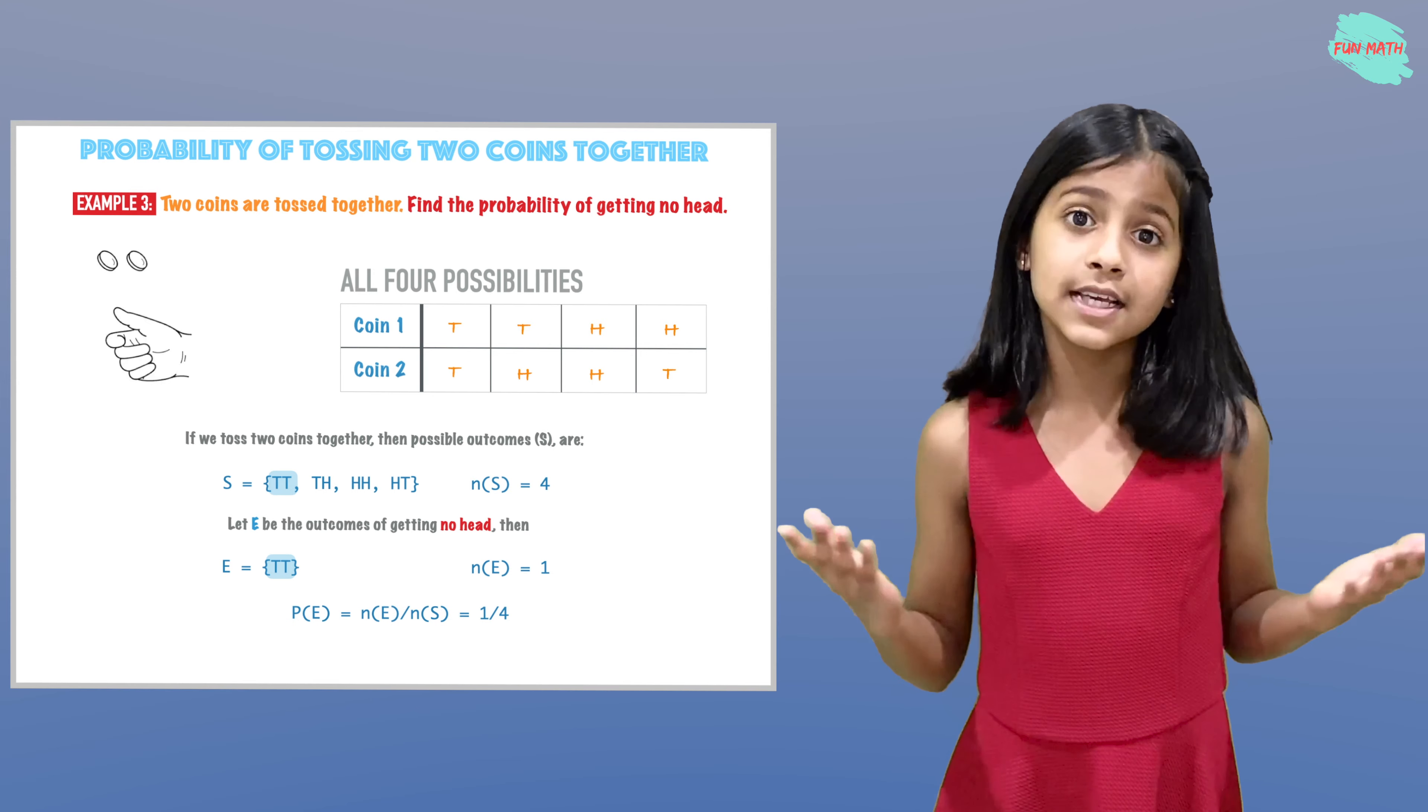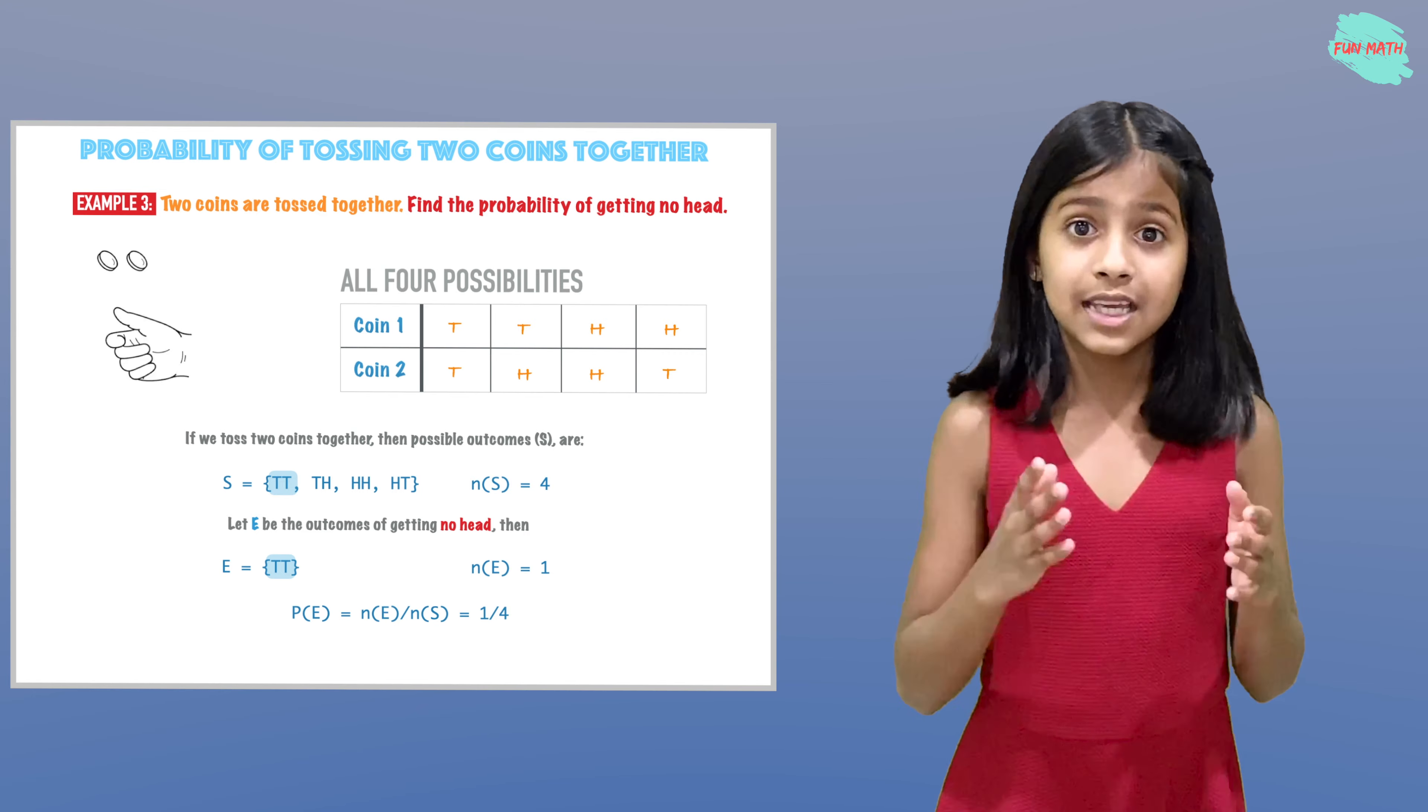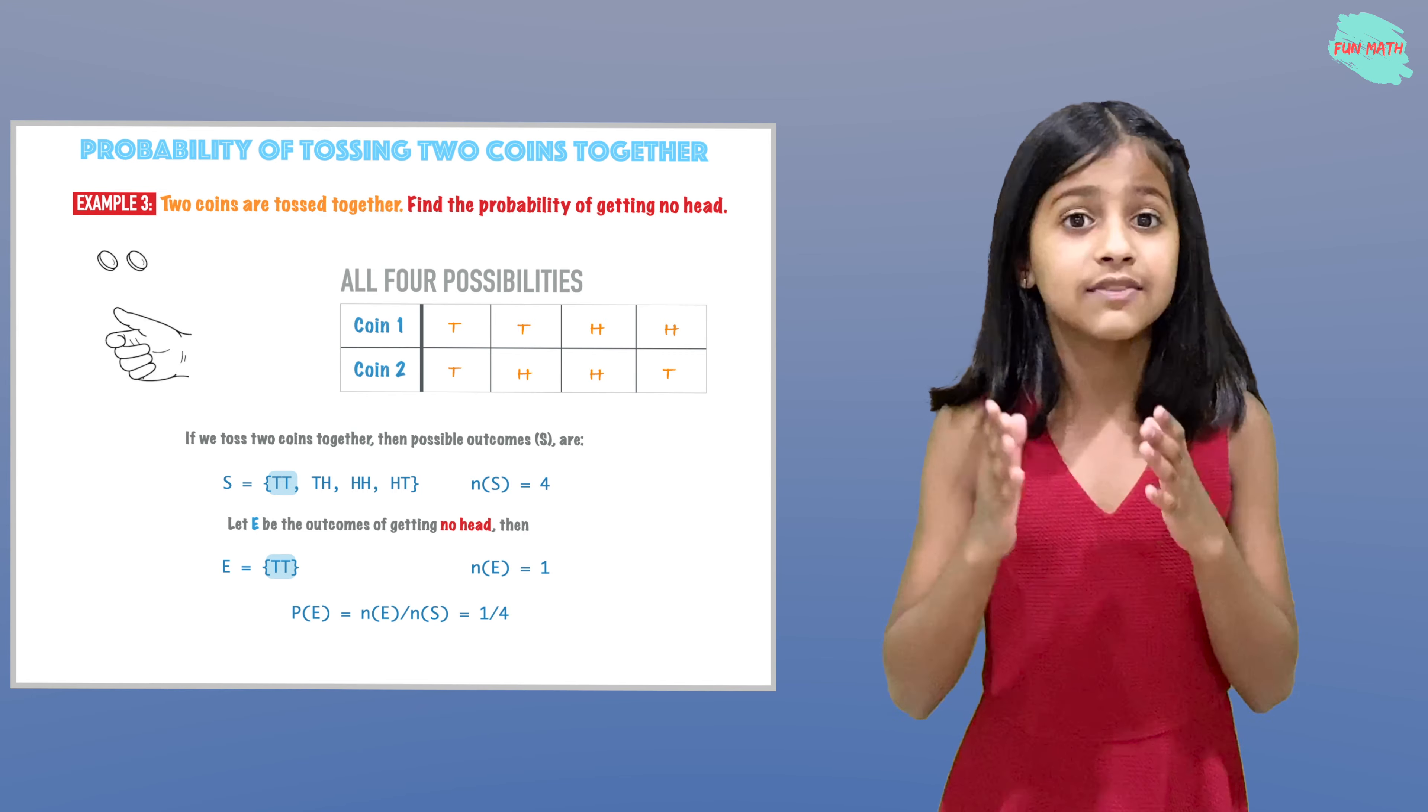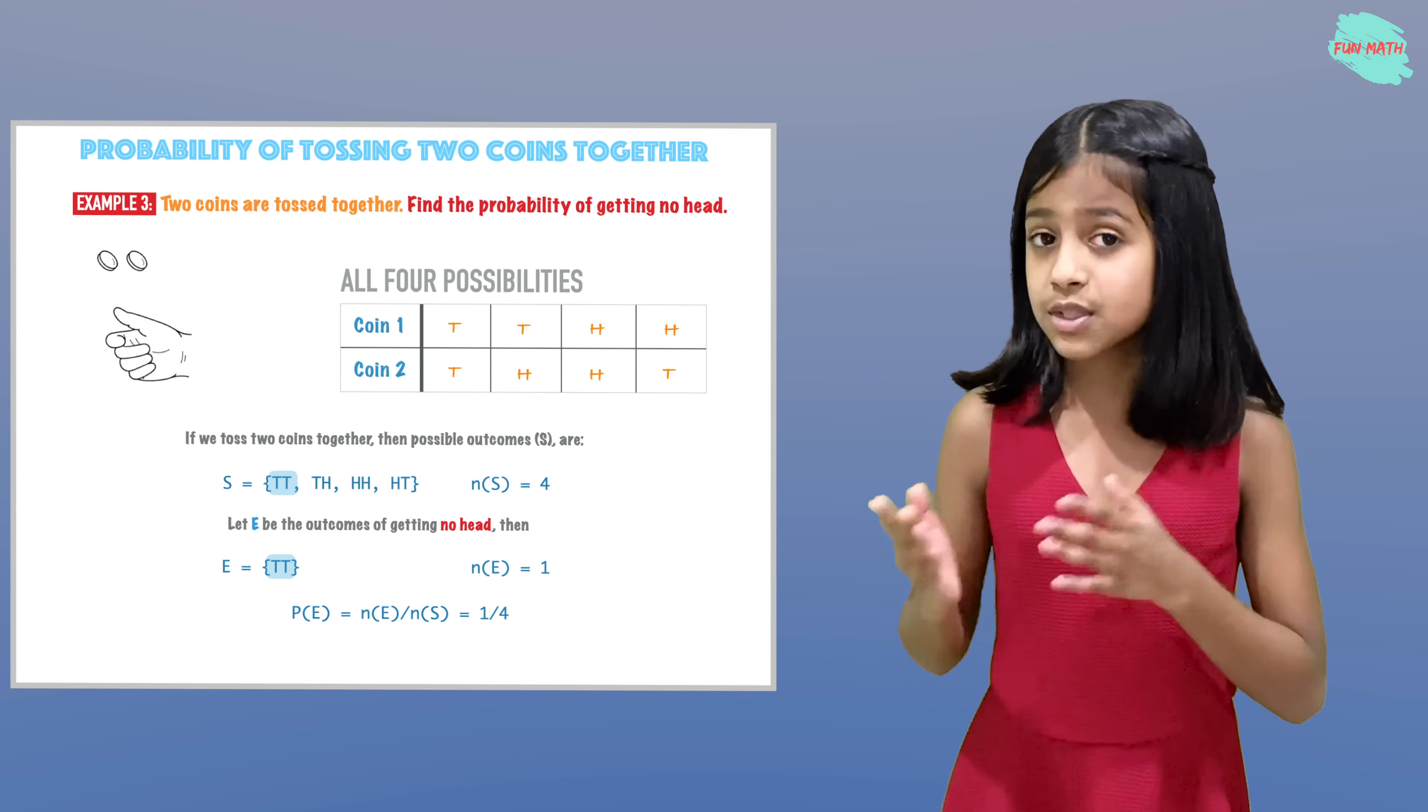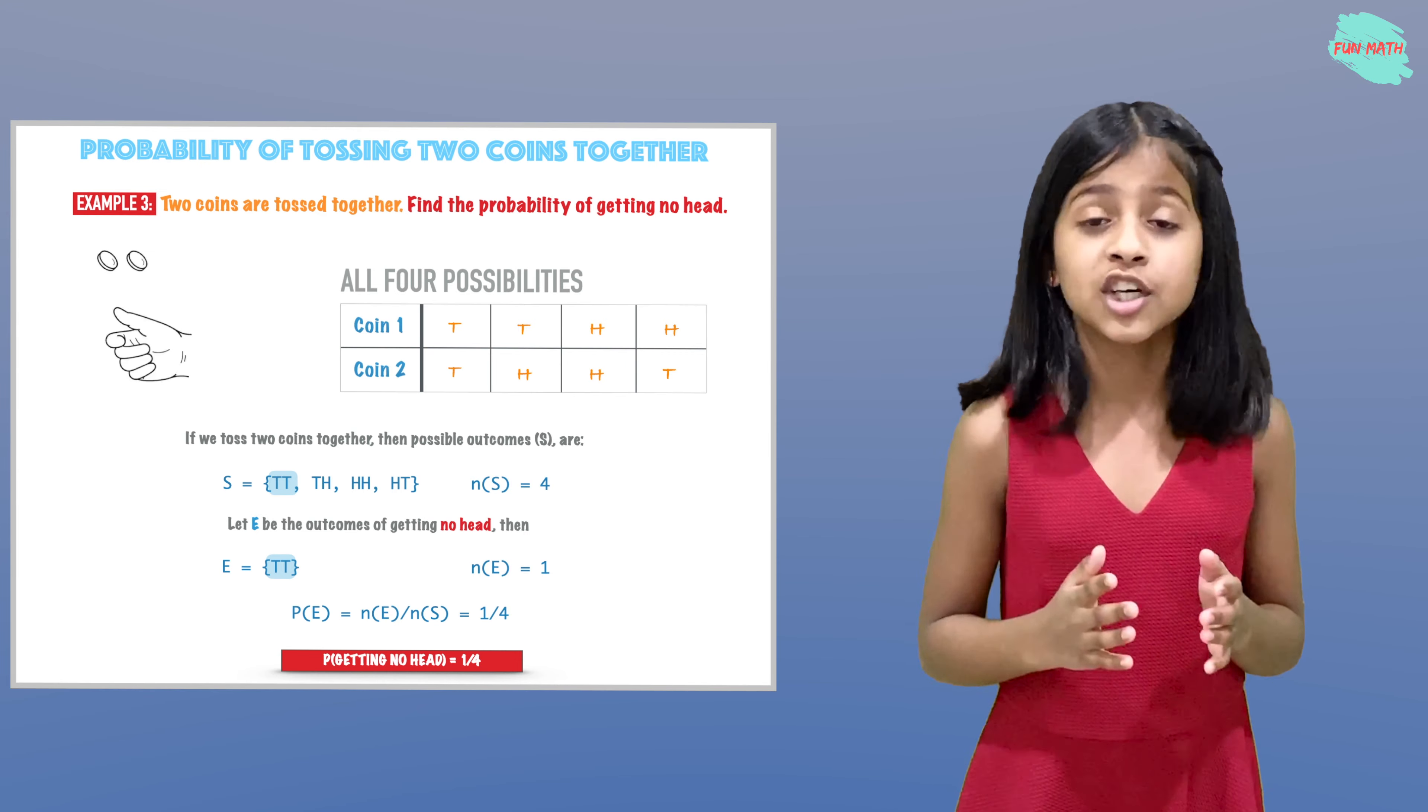Our formula is: the probability of E equals the number of elements in E over the number of elements in our sample space. If we simplify this, we get one over four. So the probability of getting no head is one-fourth.